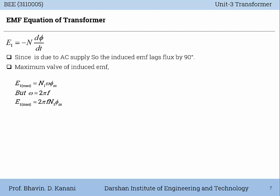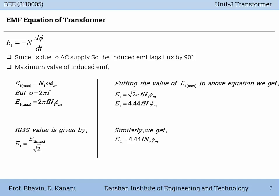The maximum value of induced EMF, E1_max, is equal to N1 × ω × Φm, and since ω = 2πf, E1_max = 2πf × N1 × Φm. The RMS value is given by E1 = E1_max / √2. Substituting the value of E1_max, we get E1 = √2 × π × f × N1 × Φm. Since √2 × π equals 4.44, we get E1 = 4.44 × f × N1 × Φm. Similarly, E2 = 4.44 × f × N2 × Φm.